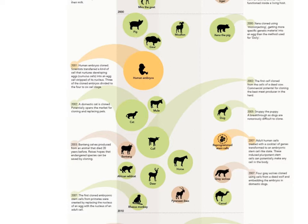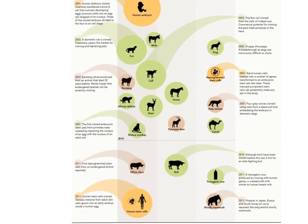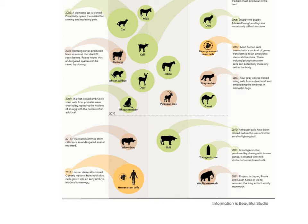An endangered animal, the banteng, was cloned from an animal that had died 20 years previously, pushing the limit of how far back you can retrieve usable DNA. Gray wolves were cloned in 2007 using a dead wolf's DNA inserted into domestic dogs. The Pyrenean ibex was similarly cloned around 2007. Significantly, the first primate was cloned — getting us much closer to humans — using a process similar to Dolly: replacing the nucleus of an egg with the nucleus of an adult cell.